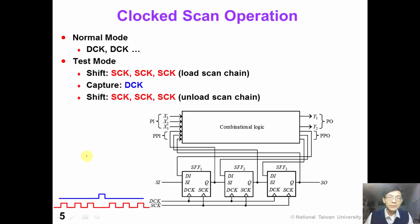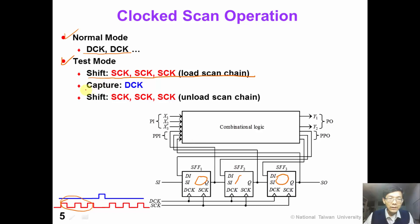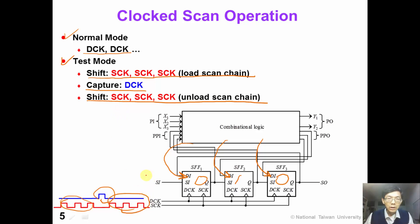This slide shows the clock scan operation. In normal mode, we just pulse the data clock DCK. In test mode, we load the scan chain and shift in our test pattern using the scan clock SCK. After three clock pulses, we load our test pattern into the scan flip-flop. We then pulse DCK to capture the response of the combinational logic into the scan flip-flop, and then unload the scan chain using SCK. In this way, we can finish a test pattern using the clock scan operation.